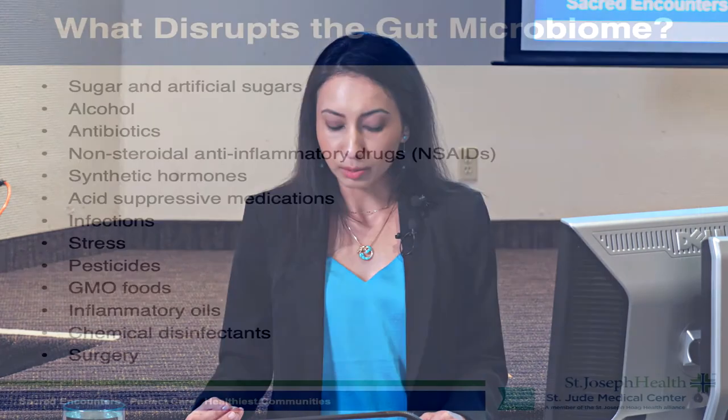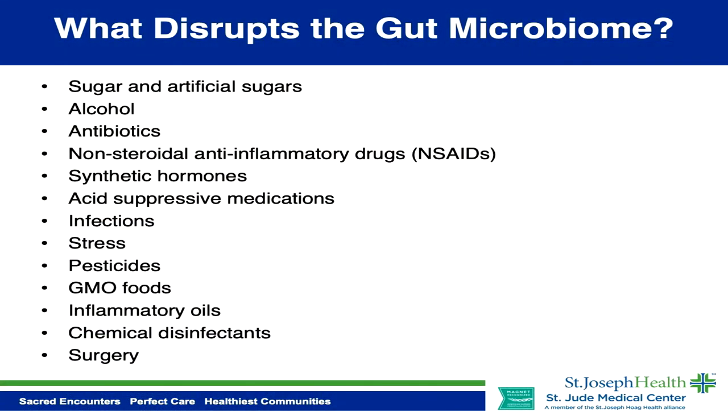So far only stevia is considered safe on the gut, but even that I recommend using sparingly, as some sensitive patients get digestive distress from products containing stevia. Alcohol is bad for the gut microbiome because it turns into sugar — that's why skin symptoms like rosacea often flare when someone indulges in a lot of sugar or alcohol.